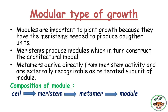The meristem divides and gives rise to the metamer, and the metamer will ultimately differentiate into the module. Modules are important for plant growth because they have the meristems needed to grow and produce daughter units. Meristems produce modules which in turn construct the architectural model. These points will be more clear in the next slide.